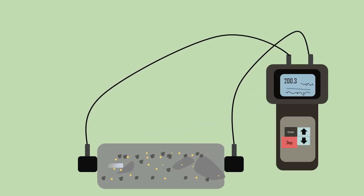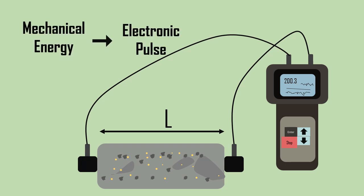Once the transducer is arranged, the ultrasonic pulse is produced by the transducer which is held in contact with one surface of the concrete member under test. After travelling a known path length L in the concrete, the pulse of vibrations is received at the other transducer. This transducer converts mechanical energy into an electrical signal, which is received by the electronic timing circuit present in the device. The time for this travel, T, is displayed on the monitor of the device.